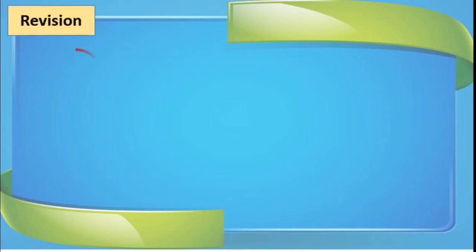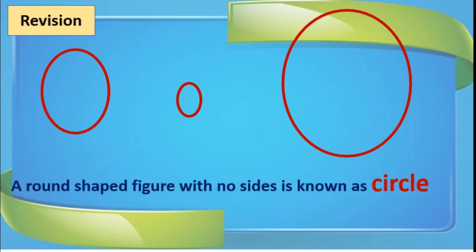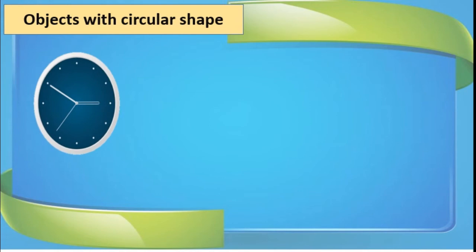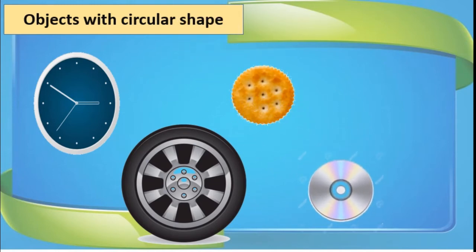Now the next shape — a circle. This you know; this is round, or you call it a circle. Here we can see three different sized circles. A round shaped figure with no sides — remember, a circle has no edges, no corners, nothing. Objects with circular shape include a wall clock, a tile, round biscuit, CD drive, bangles, and many more objects in our home and surroundings.